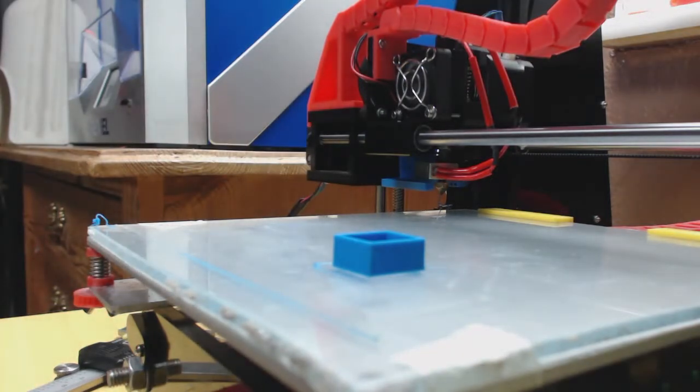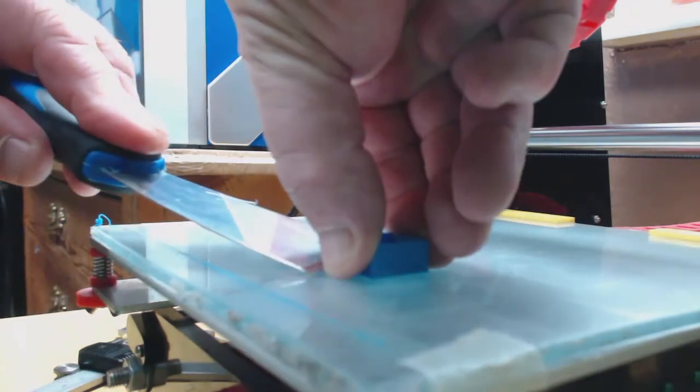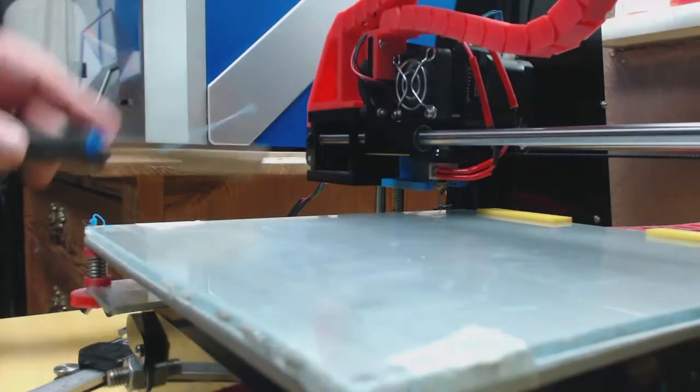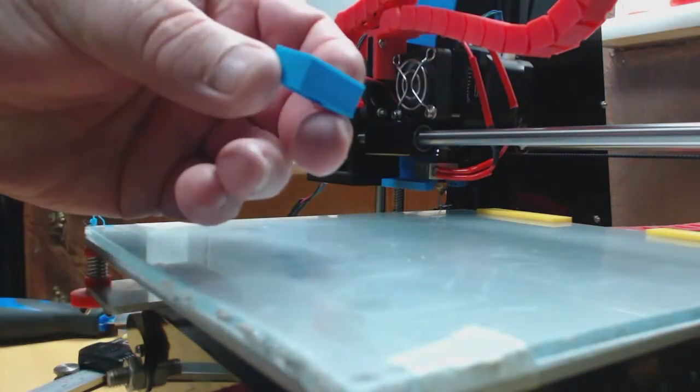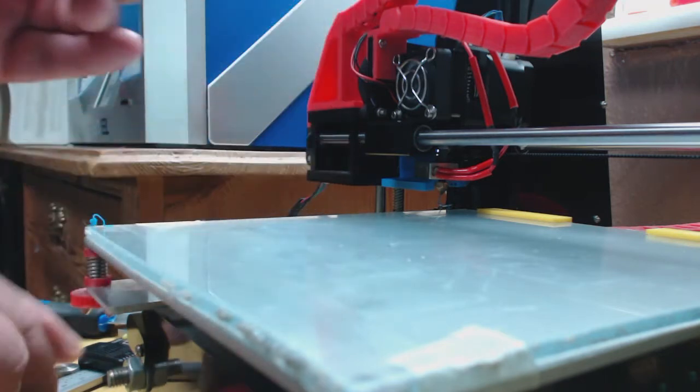It's PLA, printed on plexiglass with no heat, no hairspray, no glue. It just sticks on the bed. So let's take a look and get it off. It comes off very easy as you see. Let's take a look. It looks really nice.